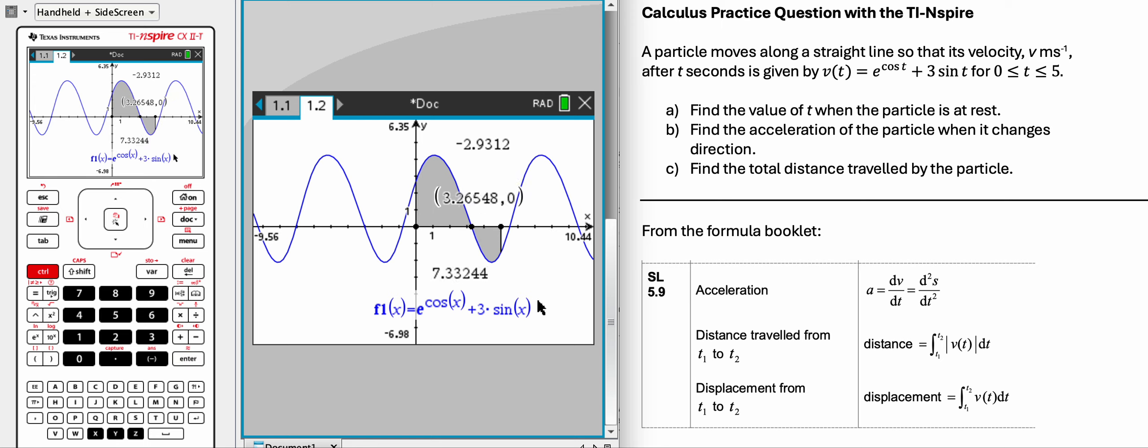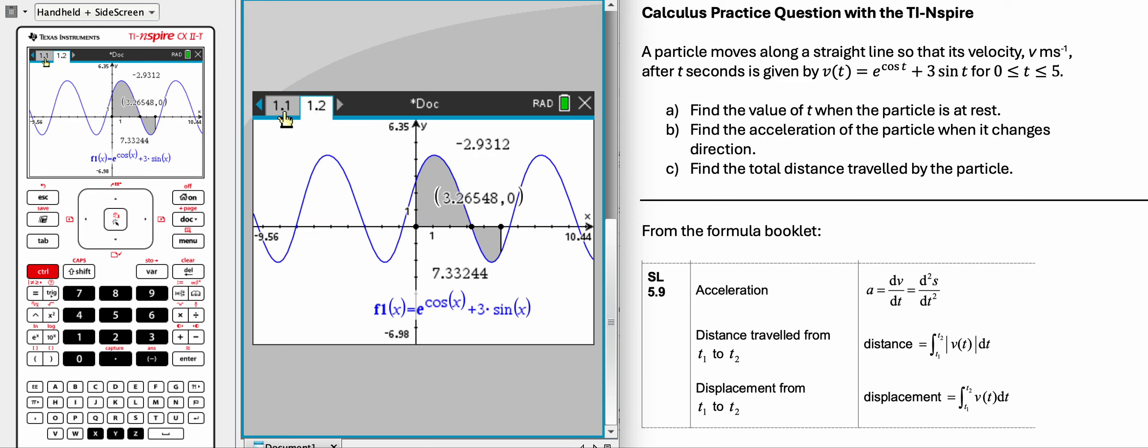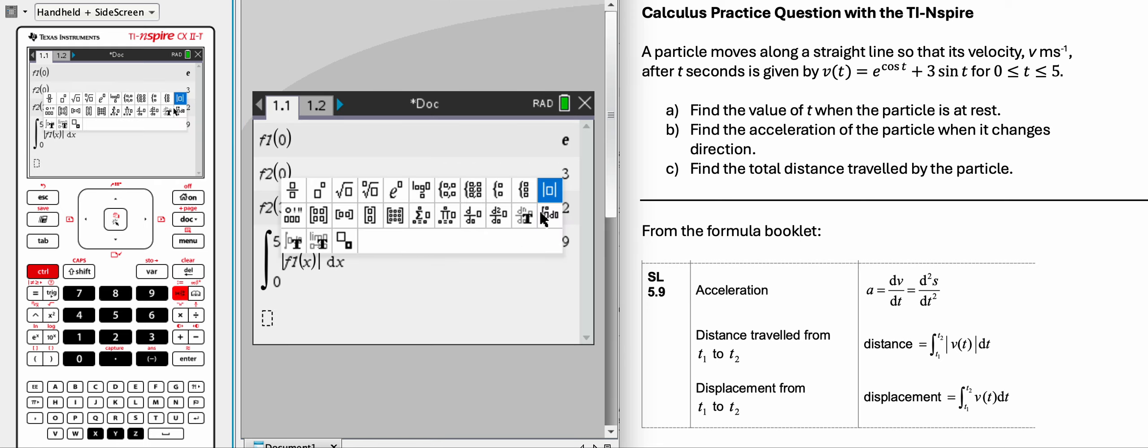Which is 7.33. So notice our answer was 12.66. So what's the difference there? Well, let's just do the other one, which is displacement.